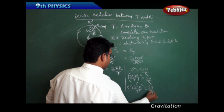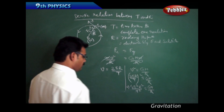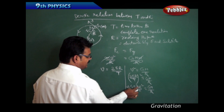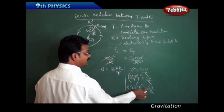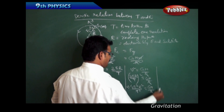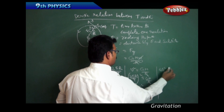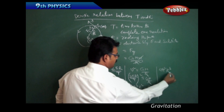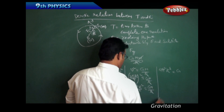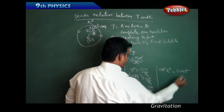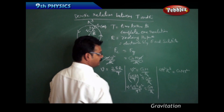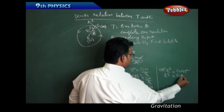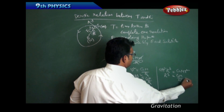Rearranging: take R to the left-hand side — it becomes R³ — and take T² to the right-hand side. So we get 4π²R³ = GM·T². Now take 4π² to the other side, where it goes into the denominator: R³ = (GM / 4π²) · T².